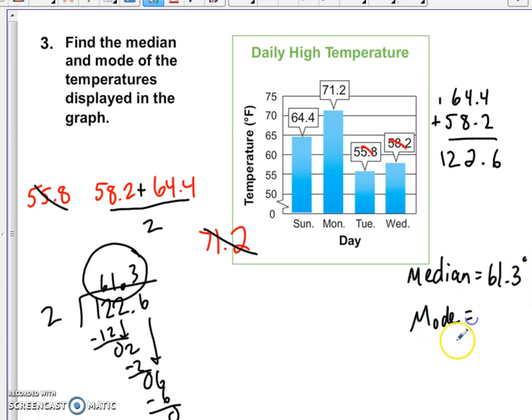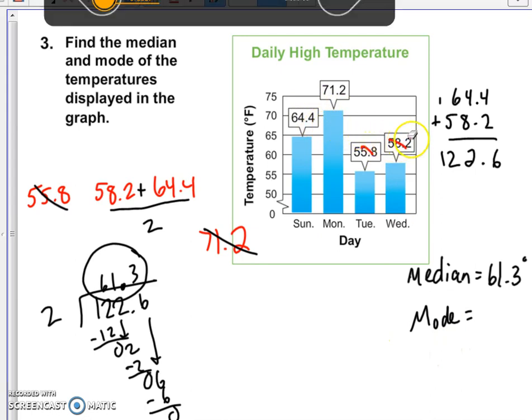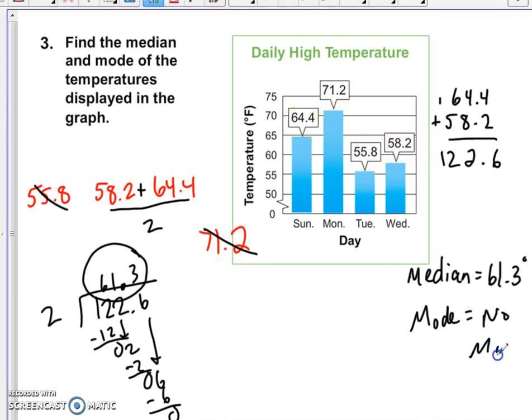Now for the mode. If we don't see any numbers in common, there is no mode. And that's a perfectly acceptable answer. To review, if you find that there are two numbers in your median, find the average or the mean of those two numbers. Whatever that number is, that's called your median. And this only happens when you have an even number of pieces of data.